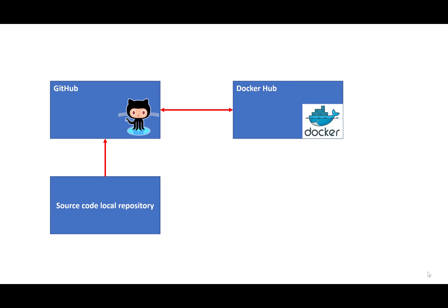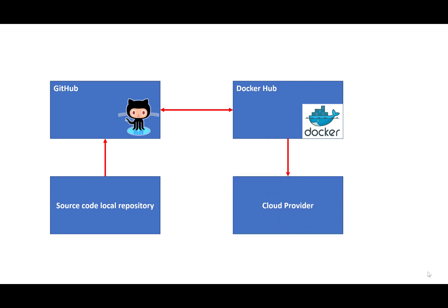We start with source code in our local repository on our local laptop, then we push this source code to GitHub, and then we set it up so that Docker Hub can immediately go ahead and create a Docker image. We take this image and run it in SAP Cloud Platform — any cloud provider. And then when we make changes to the source code on our laptop and push it back to GitHub, this commit triggers a new Docker image build in Docker Hub. It's not going to immediately change the container running in the cloud provider.